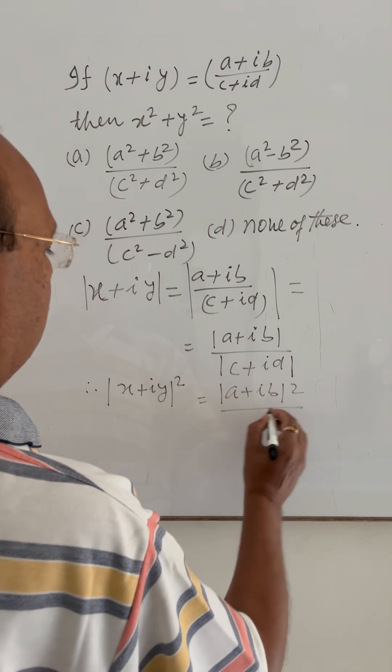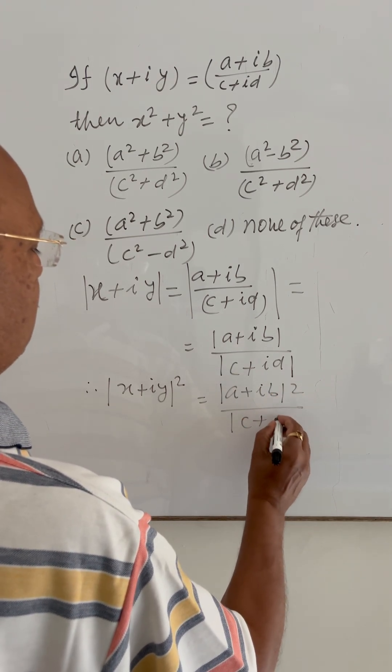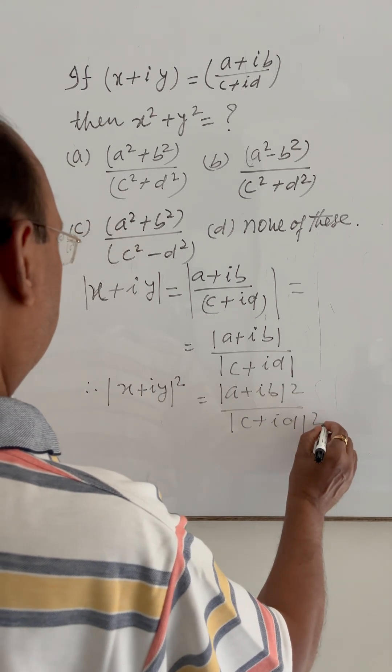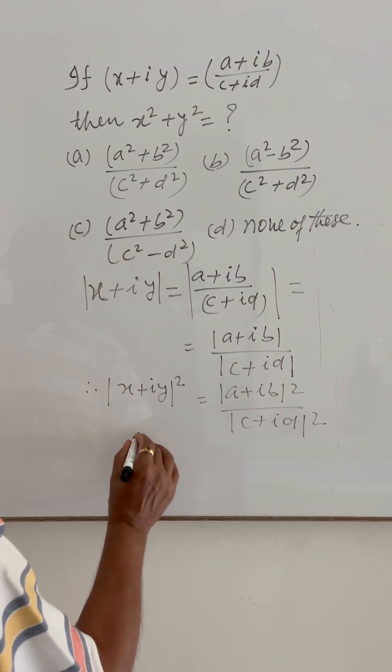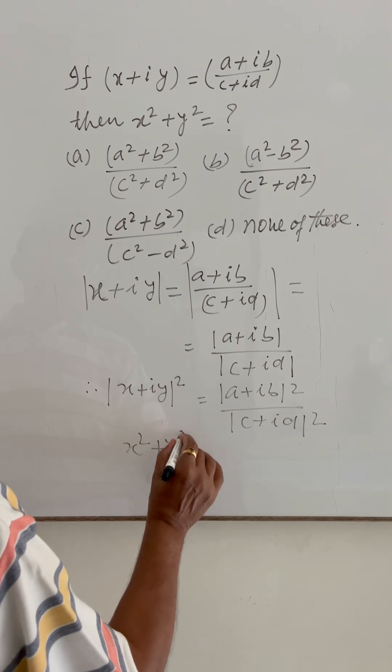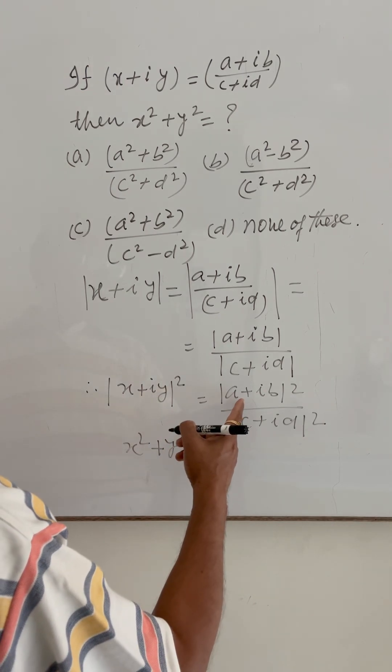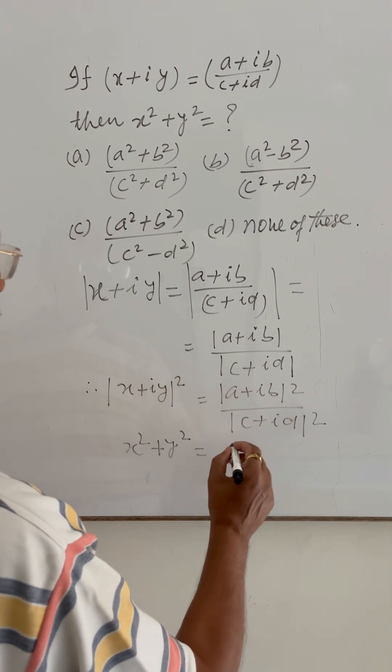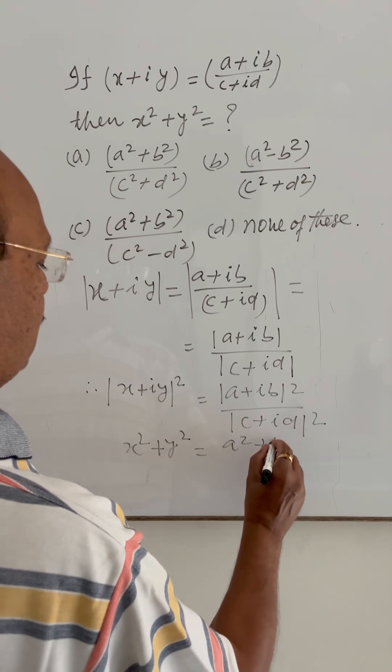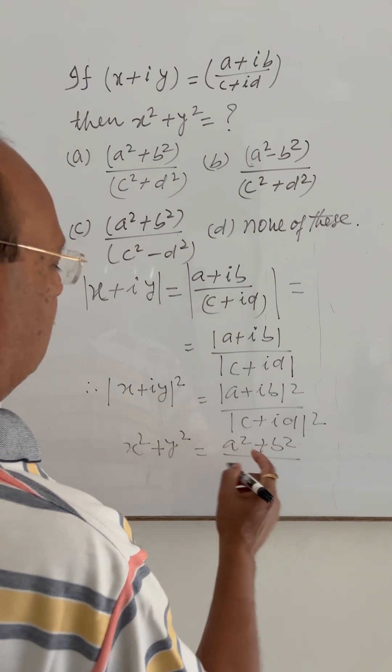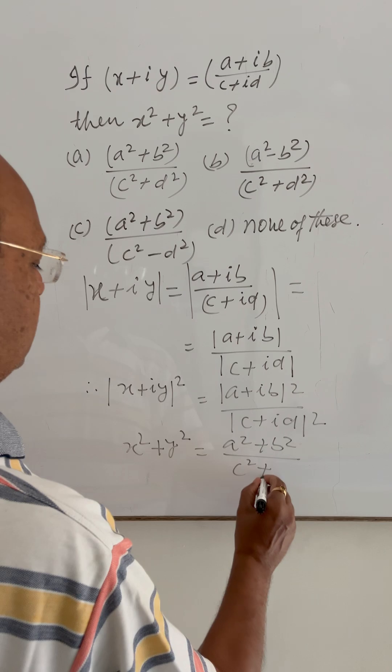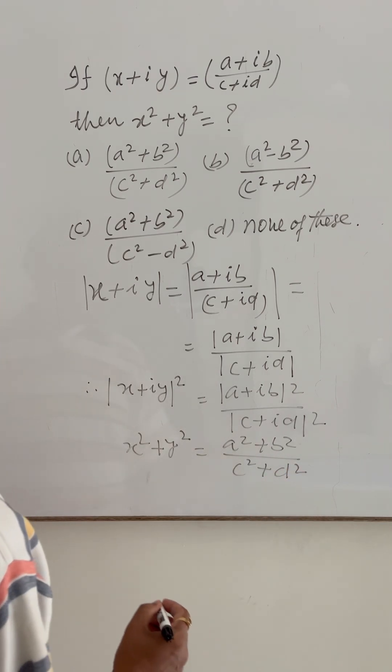upon mod of (c plus id) square. This mod square equals x square plus y square. Similarly, (a plus ib) mod square is a square plus b square, and denominator is c square plus d square.